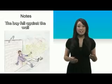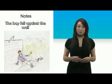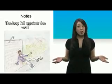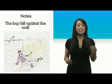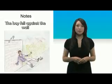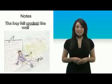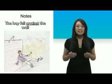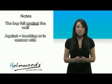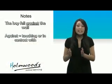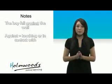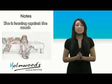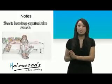Our next example. The boy fell against the wall. Where did the boy fall? Against the wall. 'Against' is the preposition. 'Against' means touching or in contact with. She is leaning against the couch.